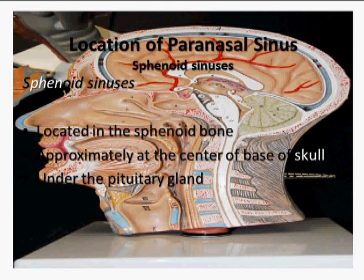Now let's look at sphenoid sinuses. They are located in the sphenoid bone, approximately at the center of the skull — in the center of the base of the skull, under the pituitary gland.